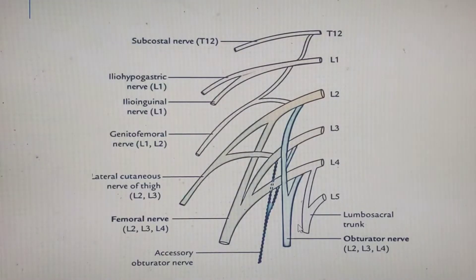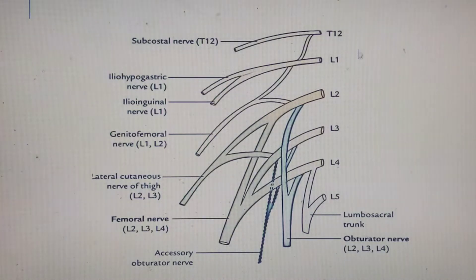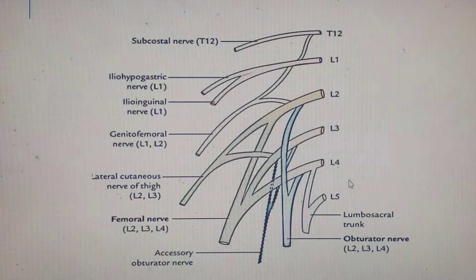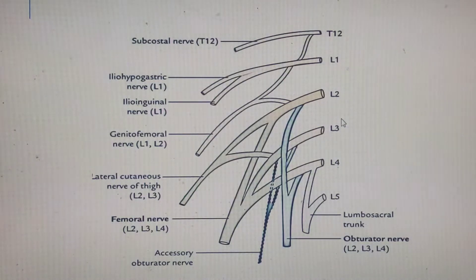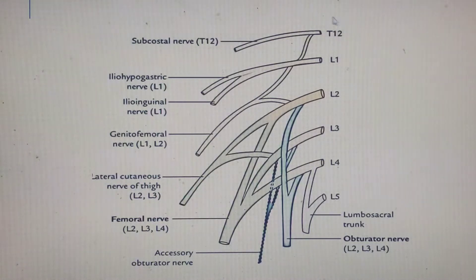Schematically, if the spinal cord is here, then in the lumbar segment we have some nerves emerging from this area. It's not only coming from the lumbar segment but also the last nerve from the thoracic segment, which is T12.